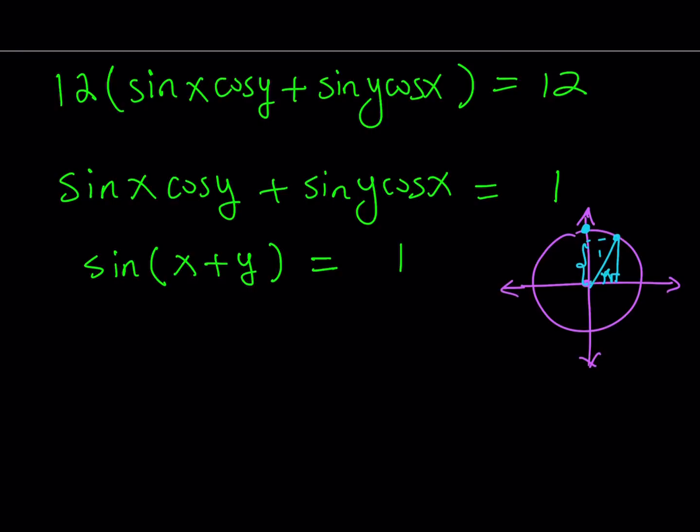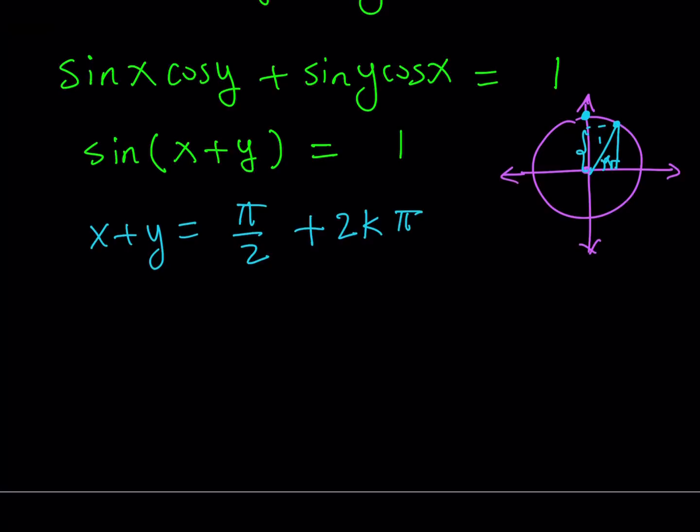But we can also write it this way. Well, x plus y is not just pi over 2 because we can also add multiples of 2 pi. So let's just add 2 pi multiplied by k, so let's write it as 2k pi. I want to express it in a nicer way, so I can write it as making a common denominator, pi plus 2k pi, and I'm going to multiply that by 2.